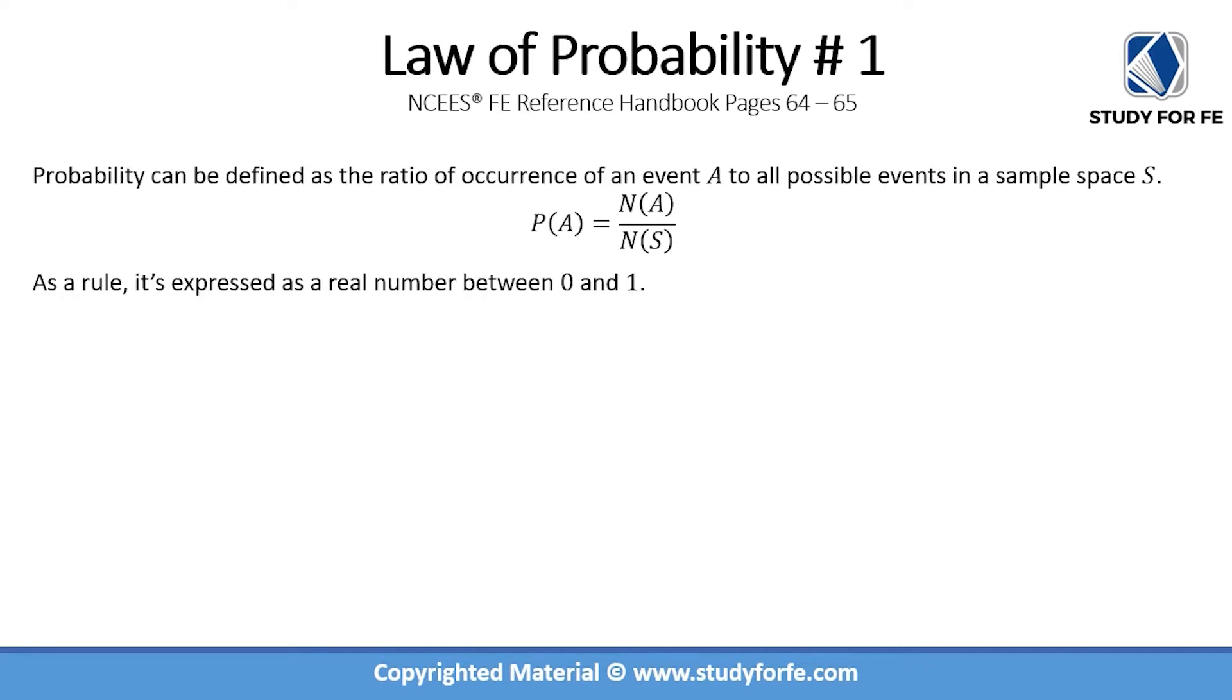Law of Probability Number One. Probability can be defined as the ratio of occurrence of an event A to all possible events in a sample space S, and mathematically is simply the ratio of the number of times A can occur to the number of times the events in the complete sample space can occur.